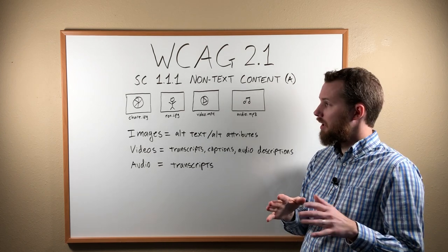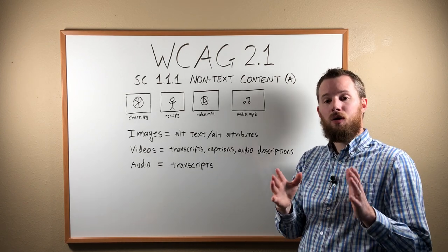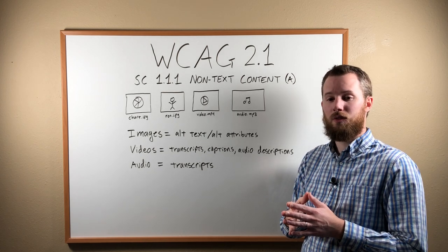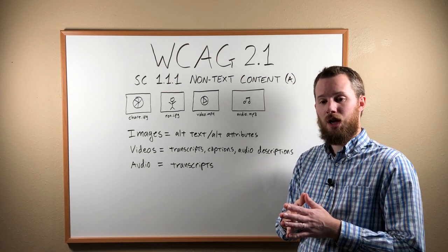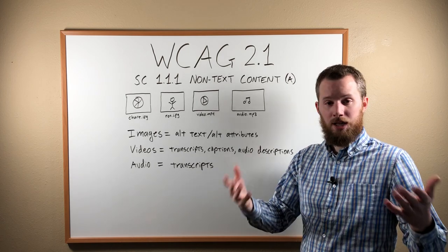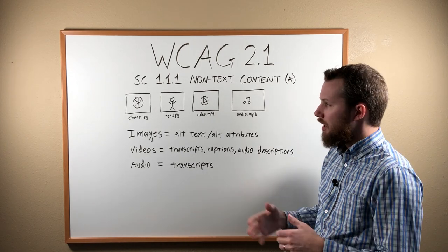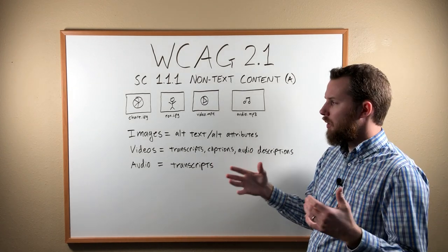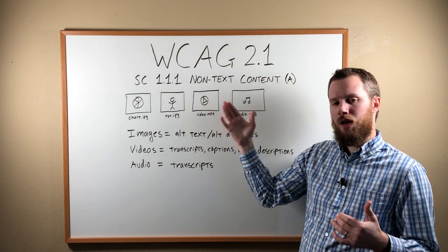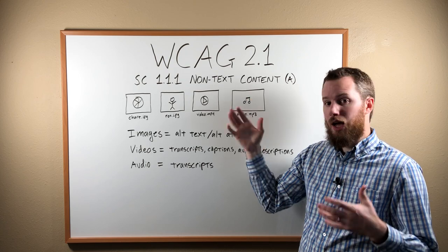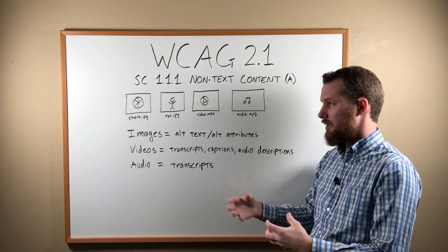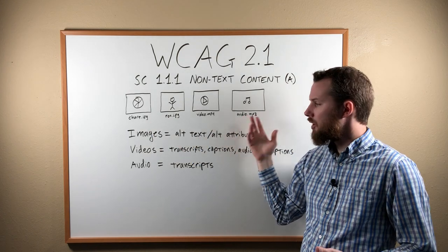I'm going to read the guideline to you. The rule states: all non-text content that is presented to the user has a text alternative that serves the equivalent purpose, except for the situations listed below. It lists a couple of exceptions, but essentially what it's trying to get at is any type of content on your web page that is not actually text needs to have text that explains what's going on.